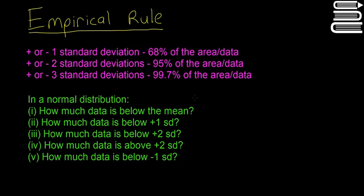Alright, so now in this video we're going to use what we learned about the empirical rule and normal distributions in the last video to help solve a problem. So again, I have the numbers up here for plus or minus 1, 2 and 3 standard deviations, and this is the amount of area or data that's enclosed within those.